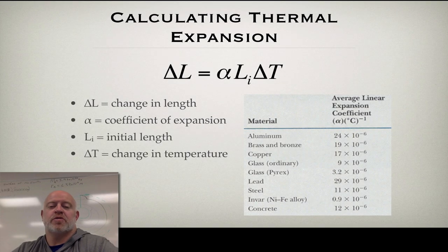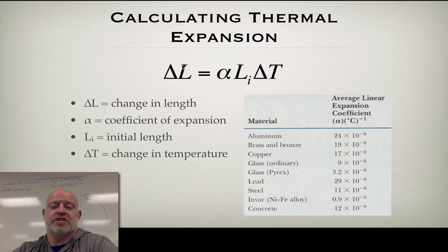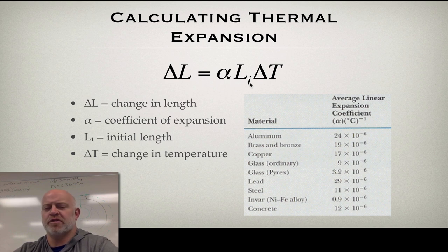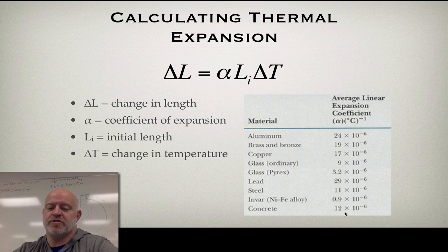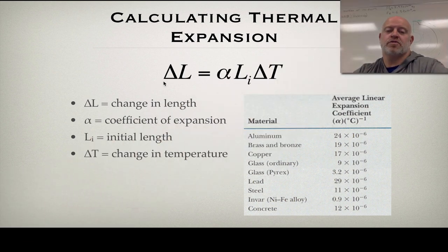Here is our actual equation. We have our change in L, we have our coefficient of expansion, we have our original — we're going to call it I for initial, because we don't use O for original in our class, we always use I. So we're going to use I for original and our change in temperature. All we need is the coefficient of expansion, which we see down here. Notice how they're pretty small numbers, so it's a small multiplier. And with this we can solve for anything we need to.